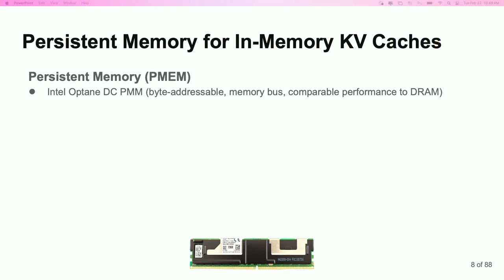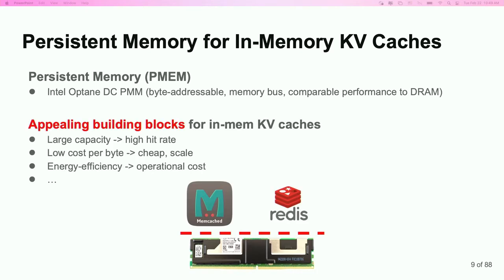Recently, we have seen a rapid development of persistent memory techniques. The Intel Optane DC persistent memory is a great example of such devices. These devices have emerged as an appealing building block for in-memory key-value caches because PMEM has large capacity, so caching over it will likely have higher hit ratio and better application performance. Also, because PMEM is less expensive and costs less energy than DRAM.